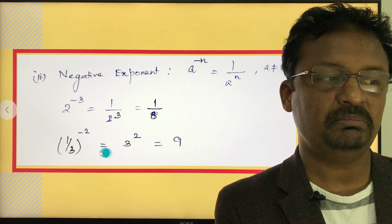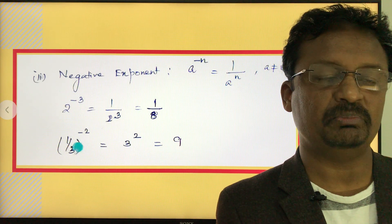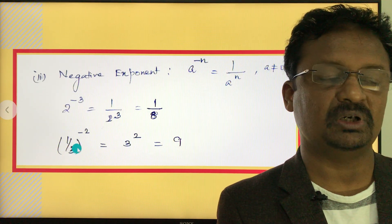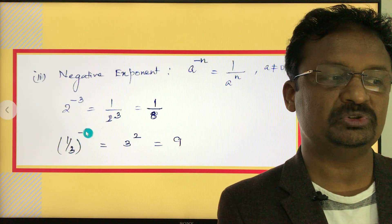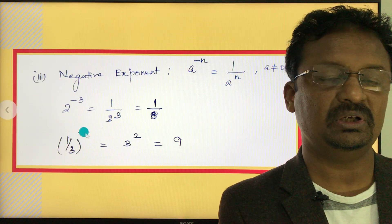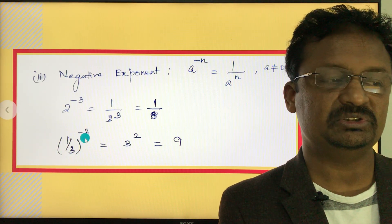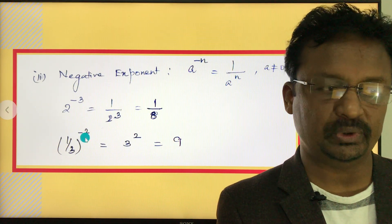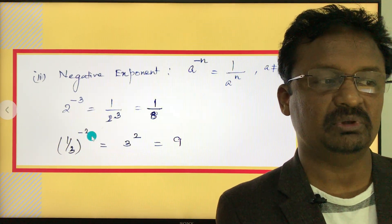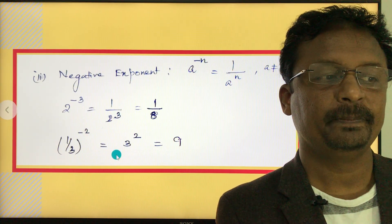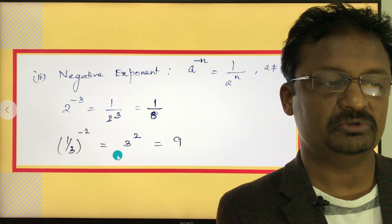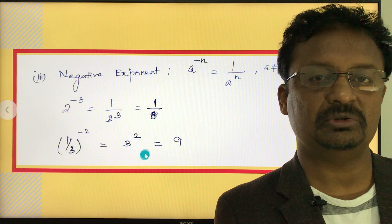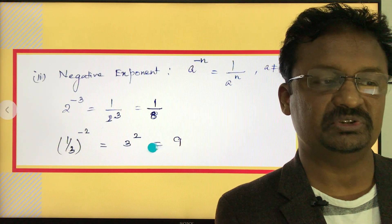To convert a fraction with a negative exponent to a positive exponent, you write the reciprocal of one-third, which is three. So it becomes three to the power of positive 2, which equals three times three, which is nine.